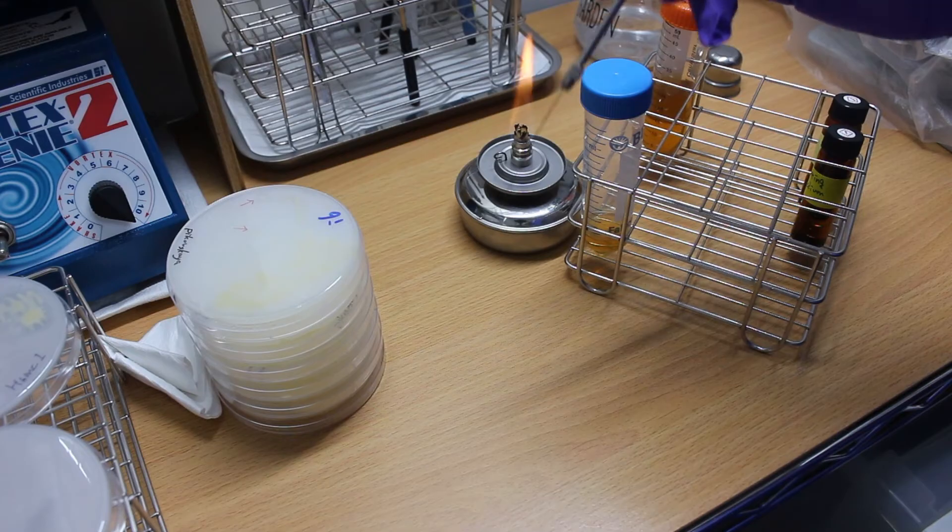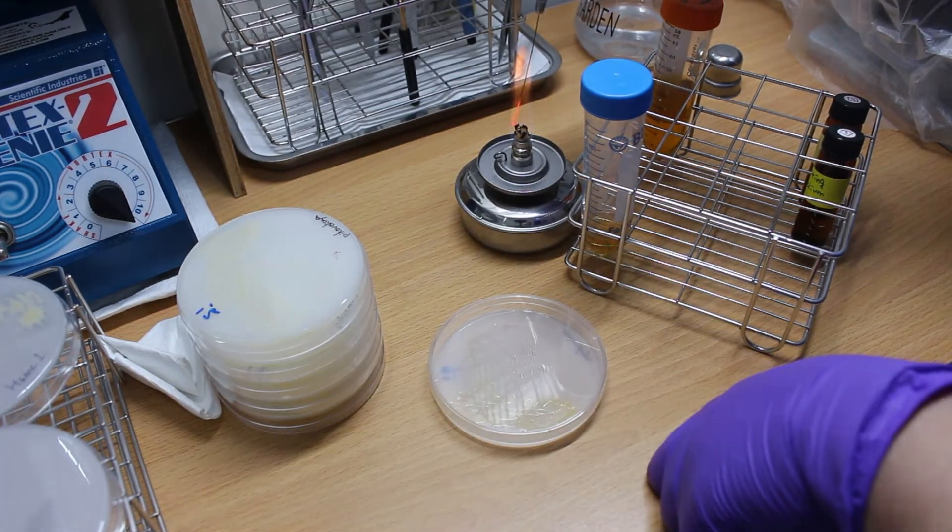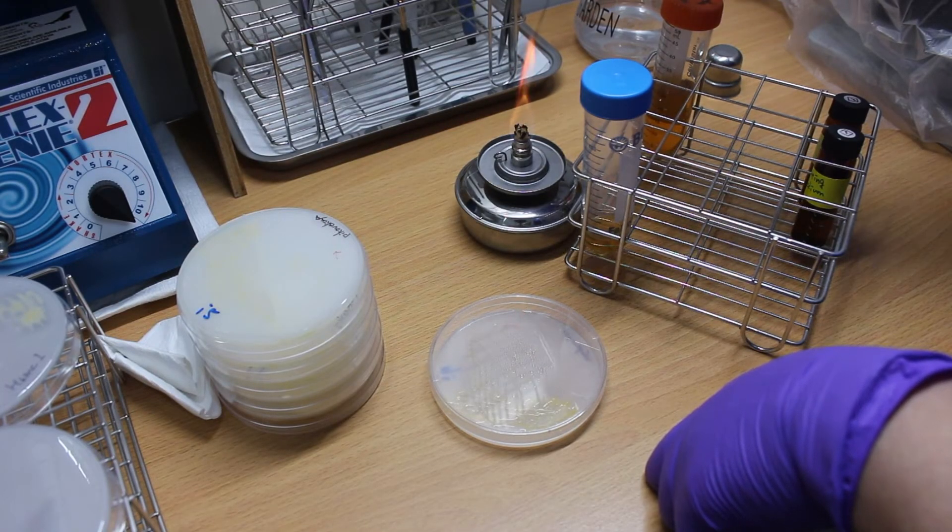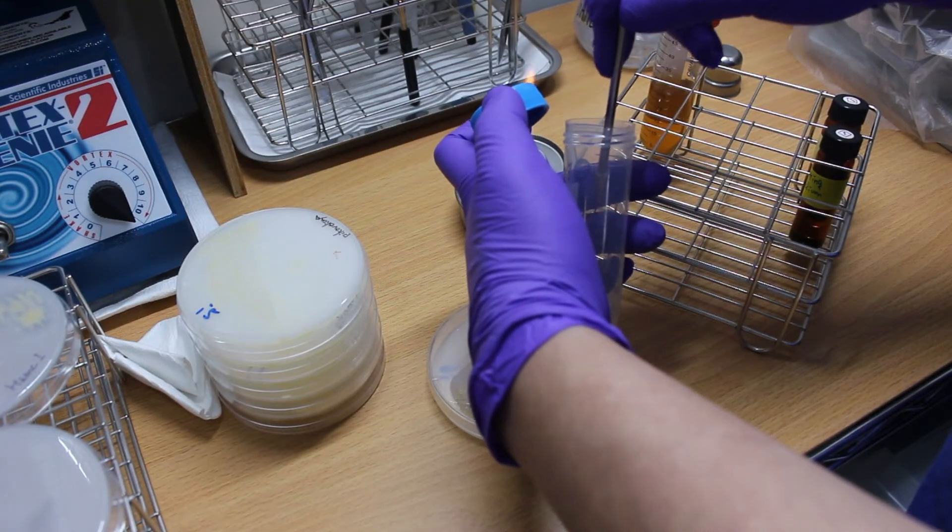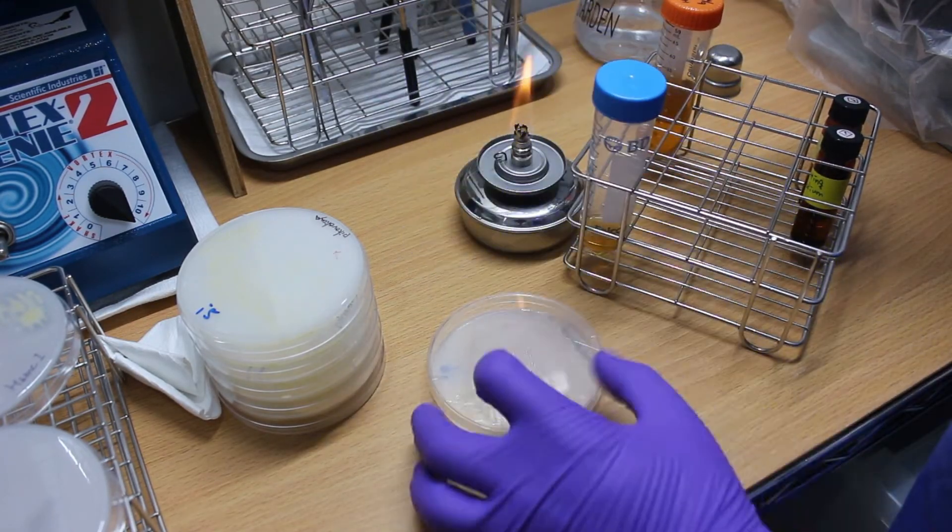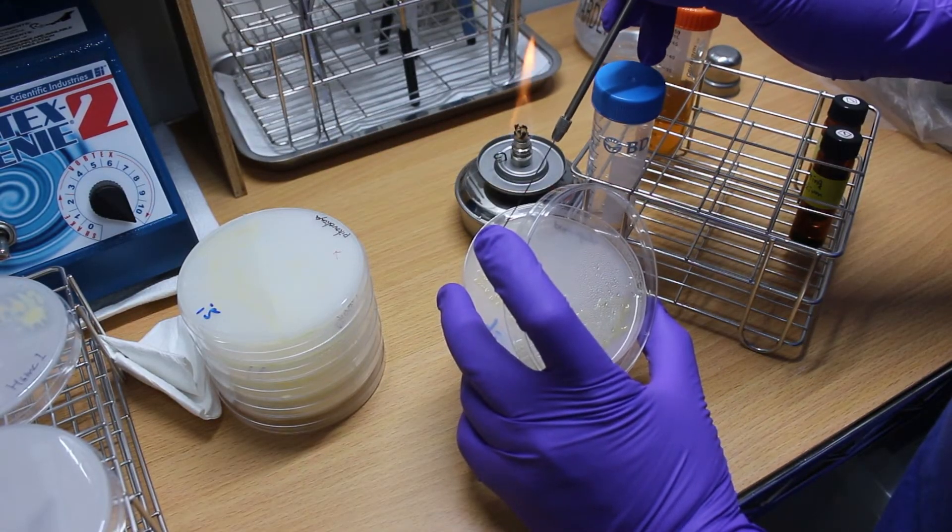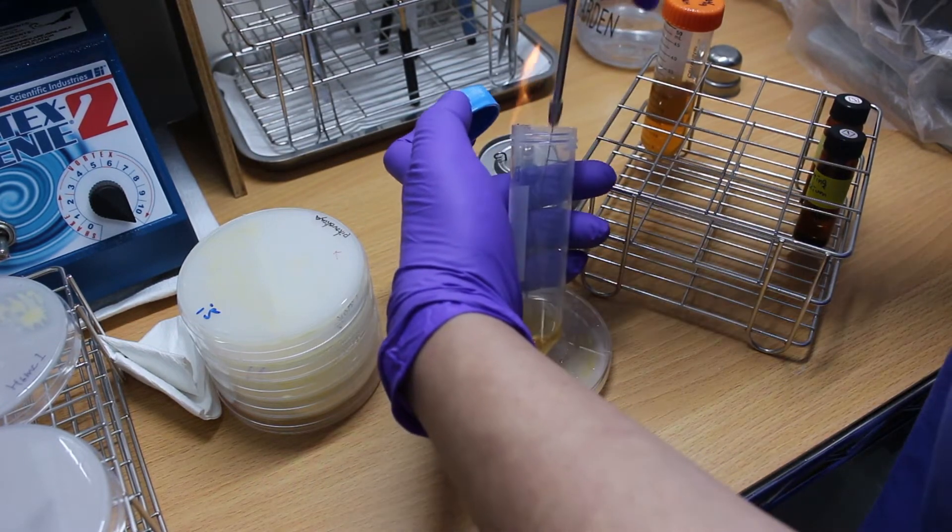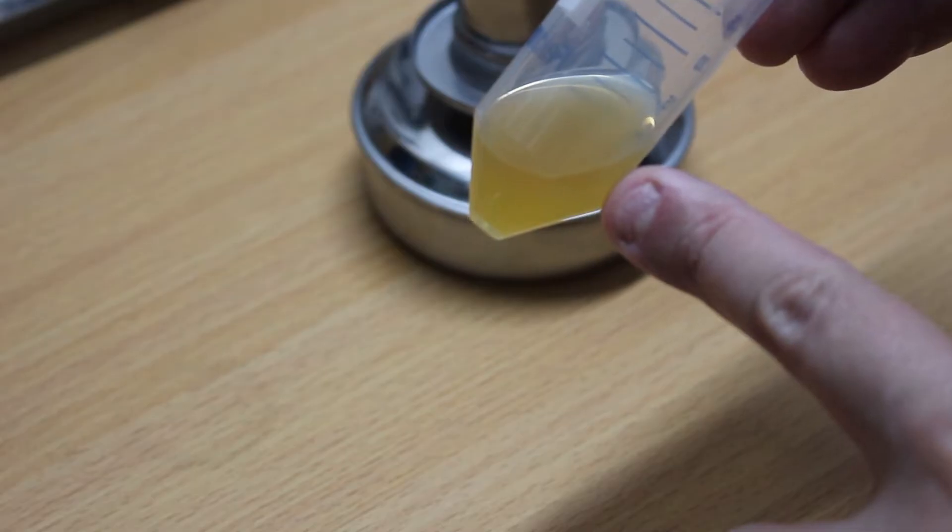Next, we need to cultivate the PSB to increase its quantity. I'll use a gradual increase method to reduce the chance of contamination. First, I use an inoculation loop to transfer a single colony into 10 to 20 milliliters of culture medium, which will be incubated at room temperature. When the culture medium becomes cloudy, it means the bacteria have grown.